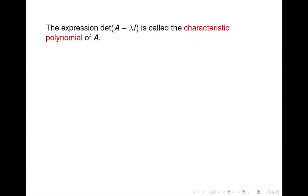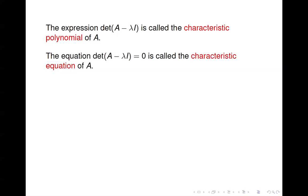A little more terminology: the expression — the determinant of A minus lambda I — is what you end up with when trying to figure out the eigenvalues of a matrix. We said you end up with a polynomial there; it's called the characteristic polynomial of A. When you set it equal to 0, we call it the characteristic equation of A. So the characteristic polynomial is what you get when you take the determinant, and setting that equal to 0 gives the characteristic equation.